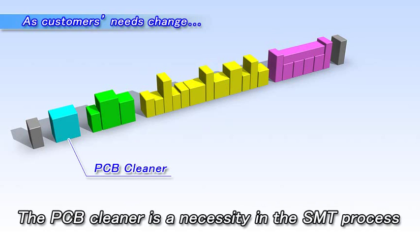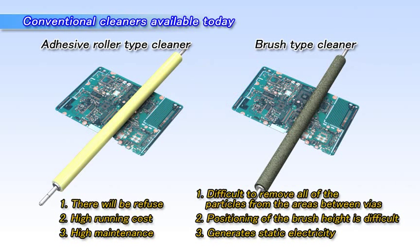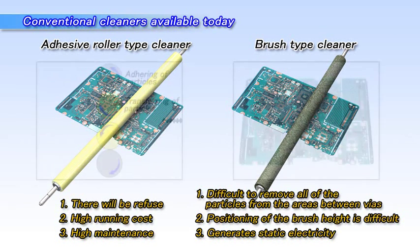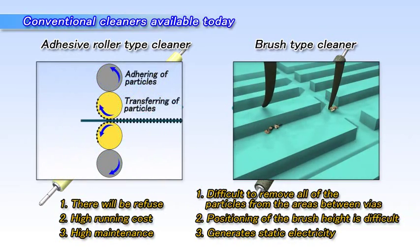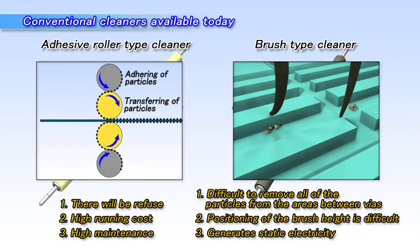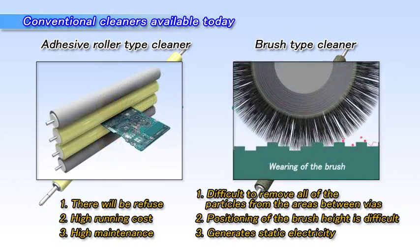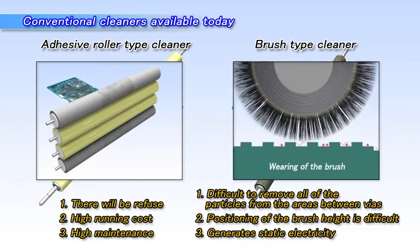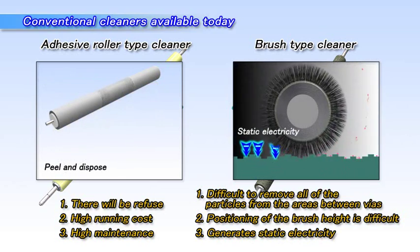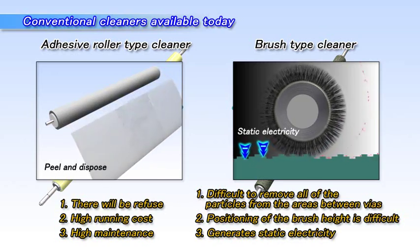What types of PCB cleaners are currently available in the market? There are two types of PCB cleaners available today. One is the adhesive roller type cleaner and the other is the rotating brush type. Disadvantages of the adhesive roller type include high maintenance and operating costs. On the other hand, disadvantages of the rotating brush type lie in their difficulty in removing particles from the areas between vias and the difficulty in setting the brush height.